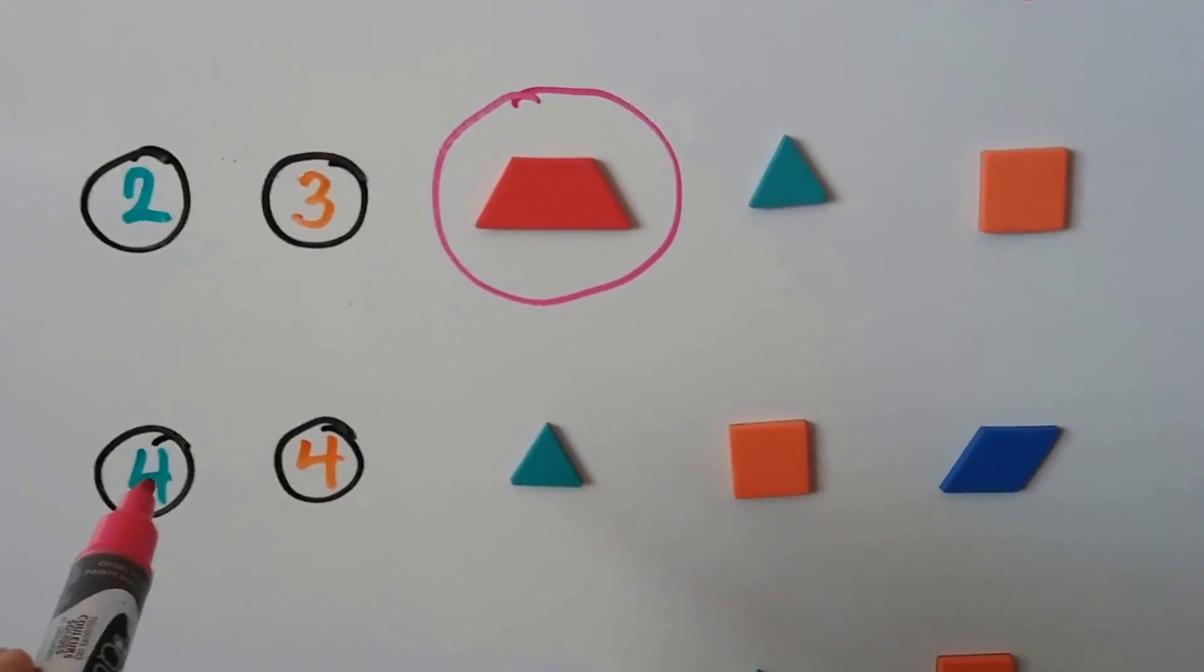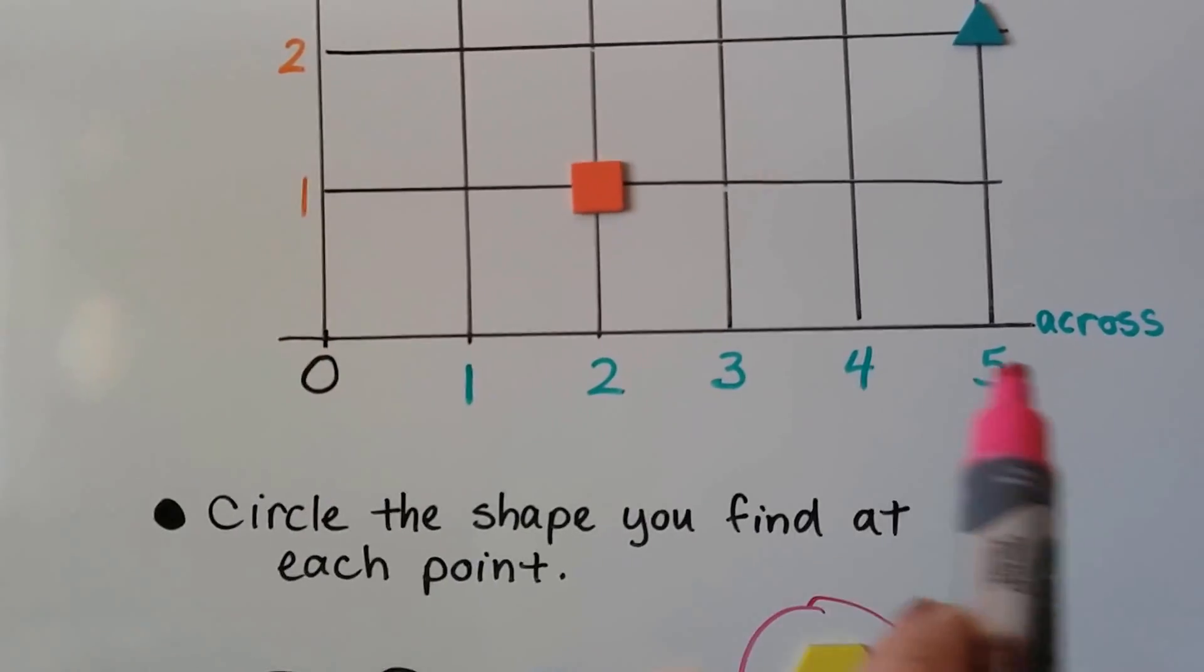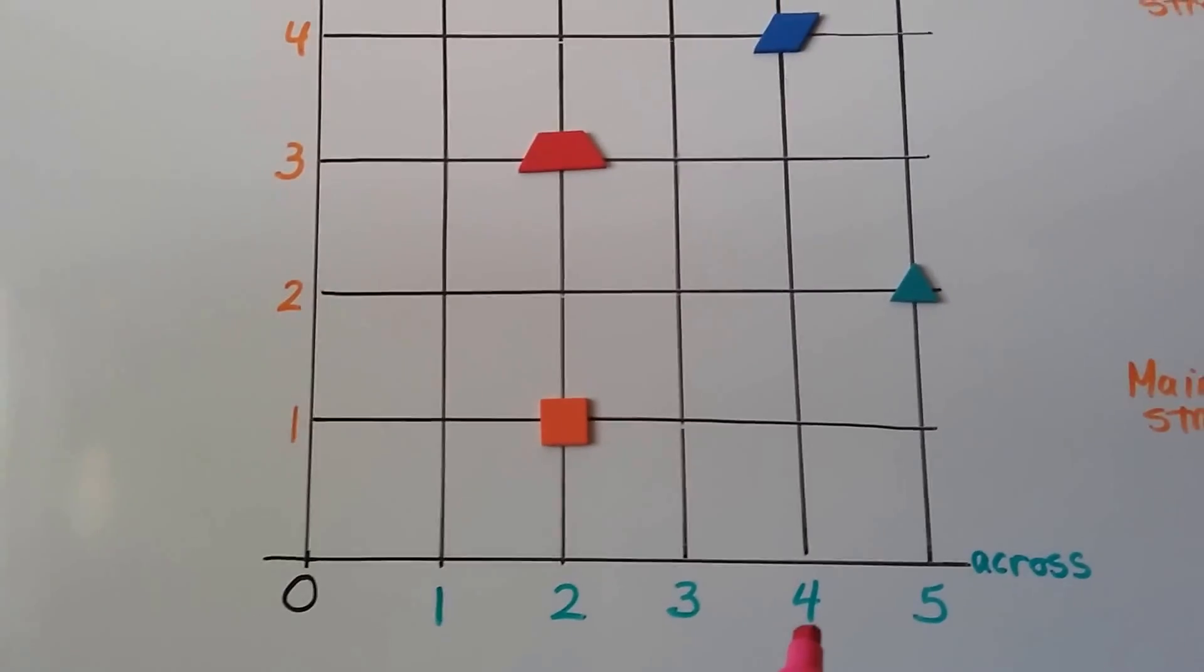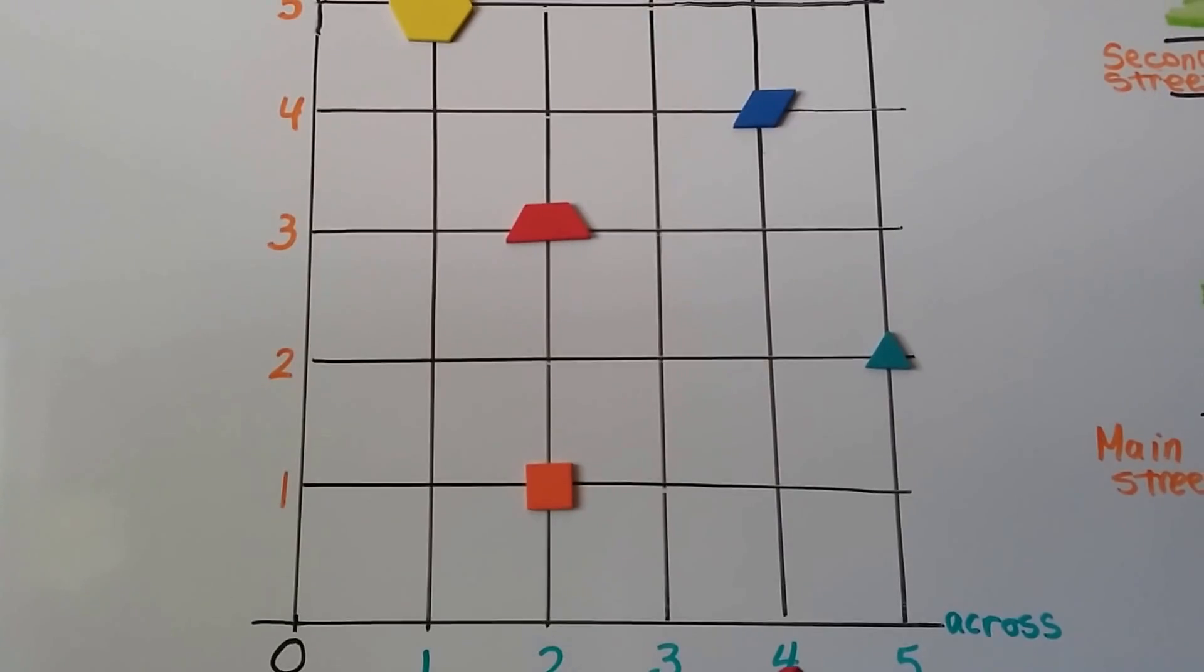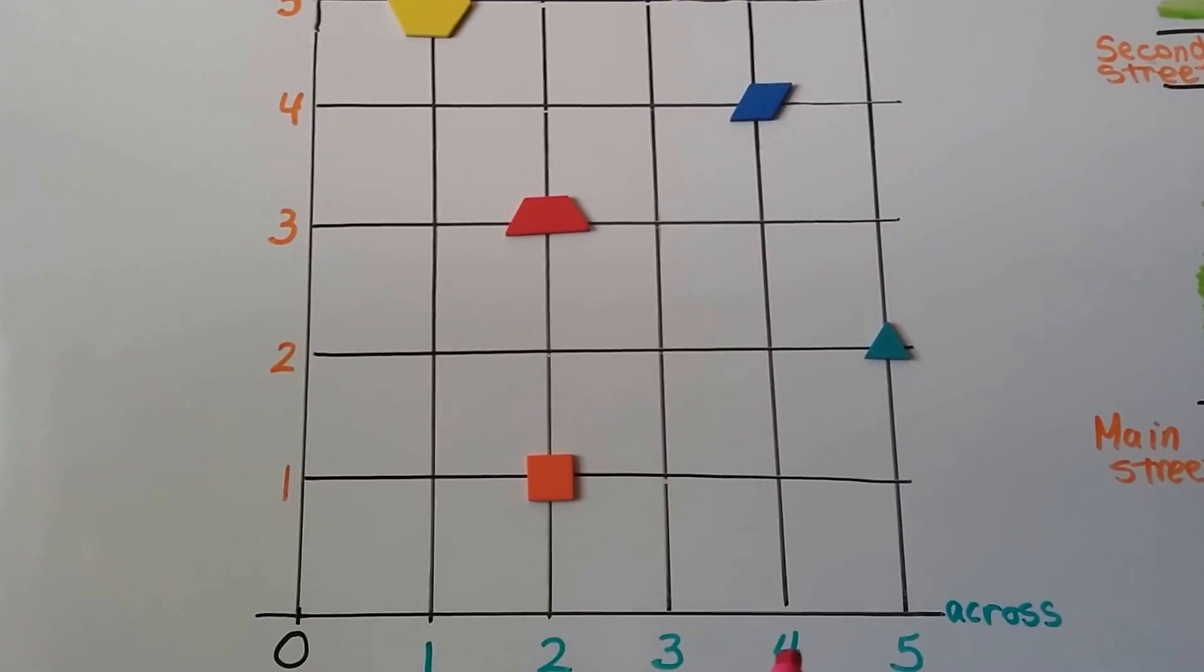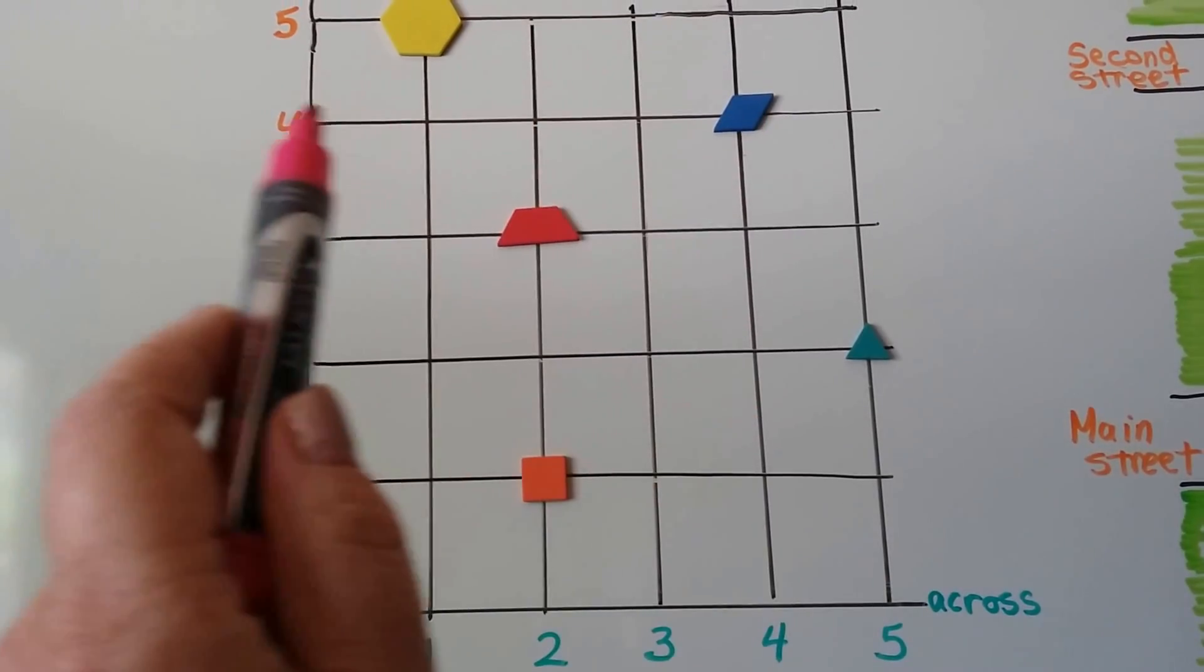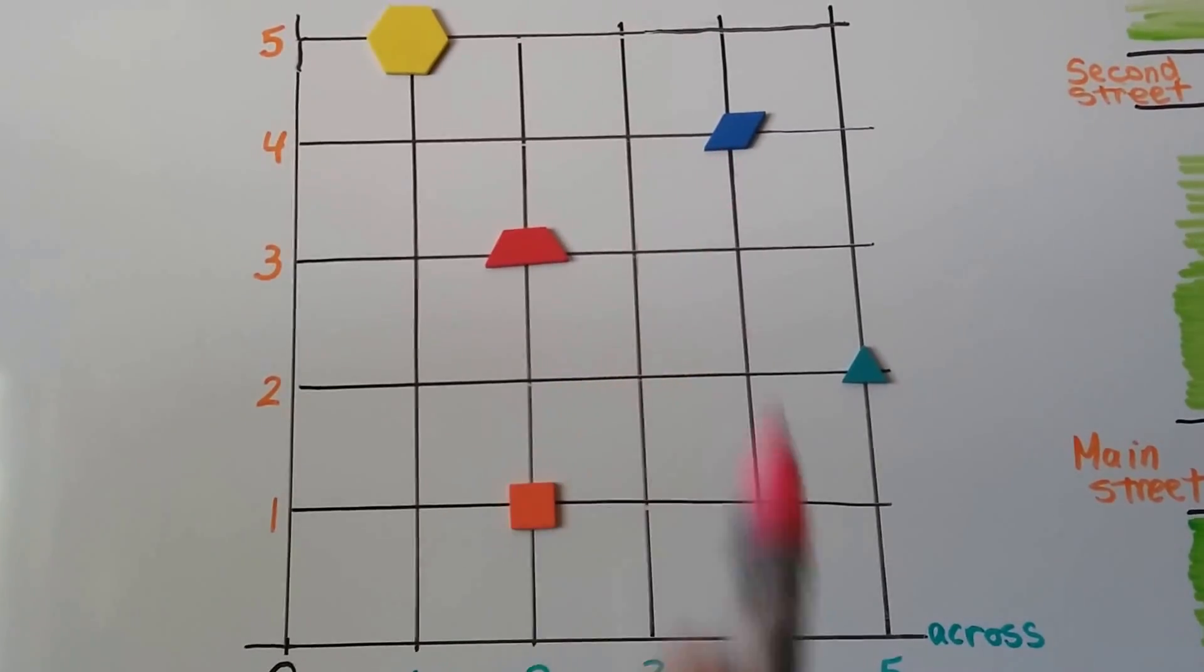At the green 4 and the orange 4, the first thing we do is find the green one because that's the one going across. That's the one we locate first. Here's the green 4 and what shape is at the orange 4 where the lines crisscross where they meet? We go up to where the 4 is. It's a blue rhombus.